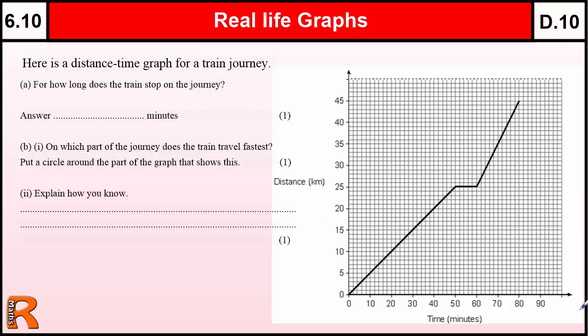So we've got distance at the side, time across the bottom, times in minutes. Whenever you're looking at graphs you need to think about what each little square means along the axis. So we've got five squares for every ten, so in this direction one little square is going to be two minutes.